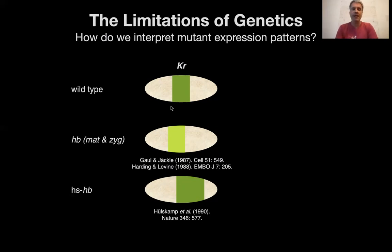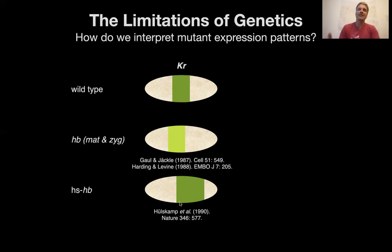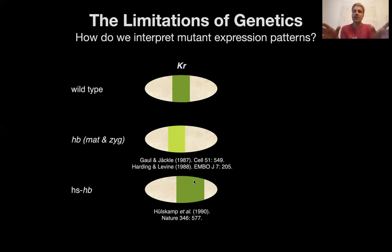You can do the reverse experiment: overexpress Hunchback using a heat shock promoter so Hunchback is everywhere. In this case, compared to wild-type, the anterior boundary of Krüppel has been pushed back towards the posterior of the embryo. You would say: Hunchback is gone, more Krüppel in the anterior; Hunchback is overexpressed, less Krüppel in the anterior — therefore Hunchback must be a repressor of Krüppel. However, in the Hunchback mutant, Krüppel gets a lot weaker. And if you overexpress Hunchback, Krüppel expands to the posterior. This indicates that Hunchback at the same time acts as both a repressor and an activator. There are two possibilities: Hunchback acts as a repressor at certain concentrations but as an activator at different concentrations.